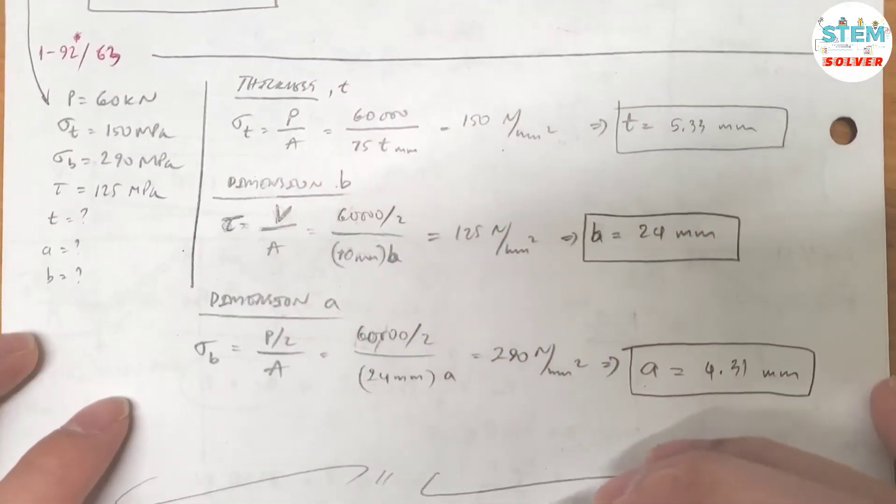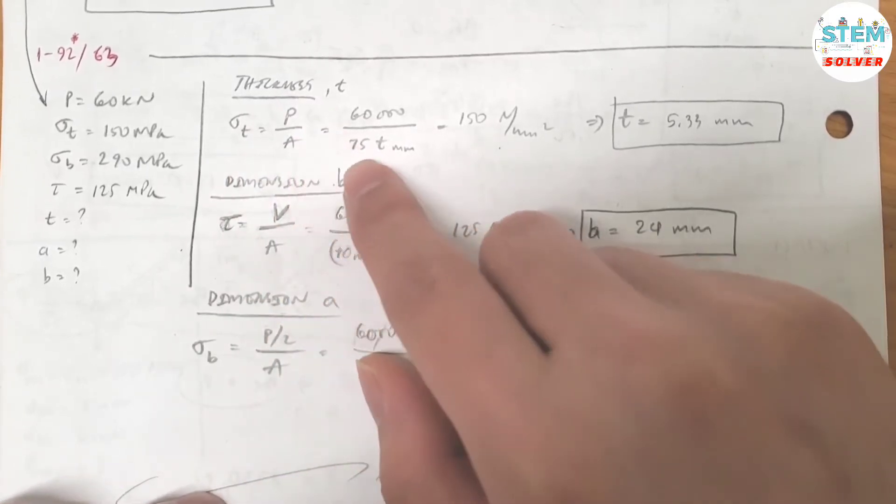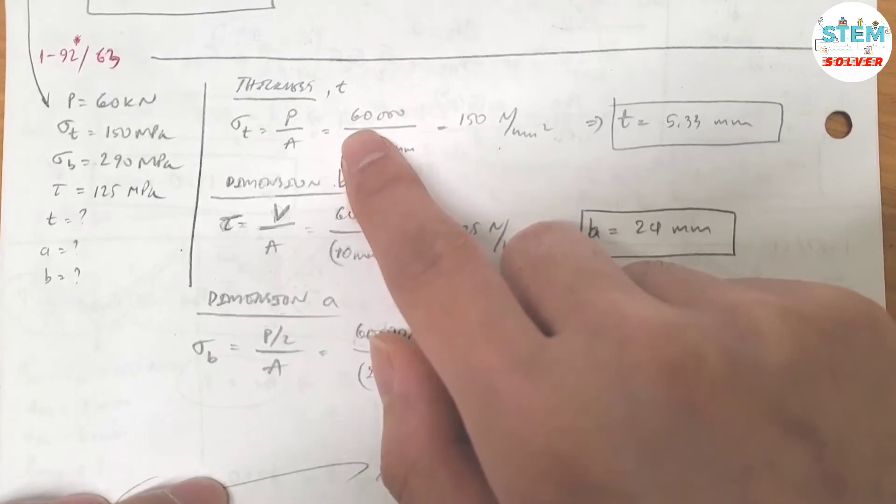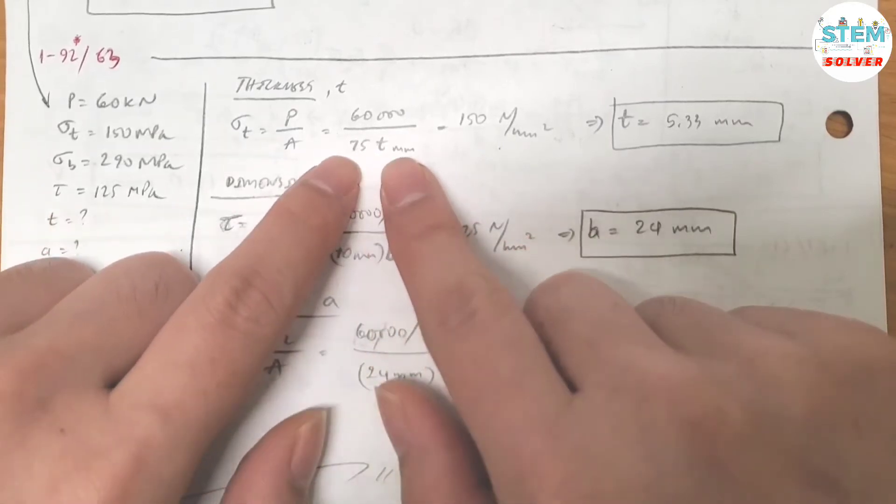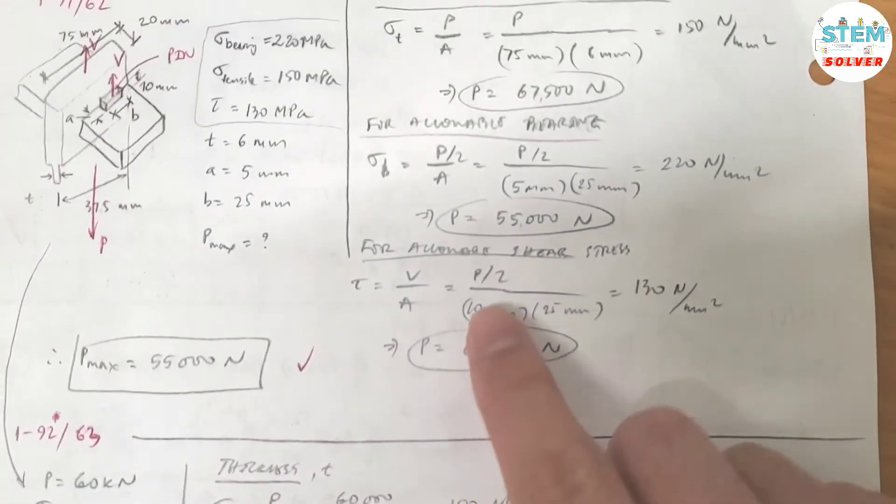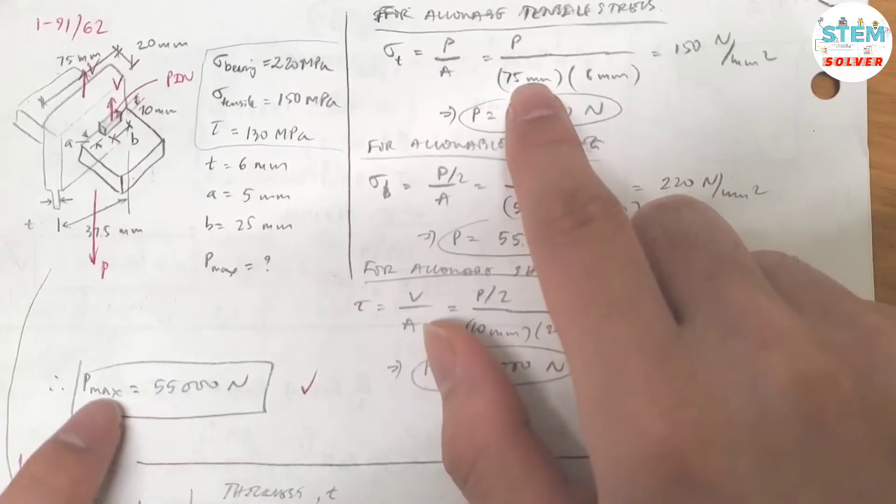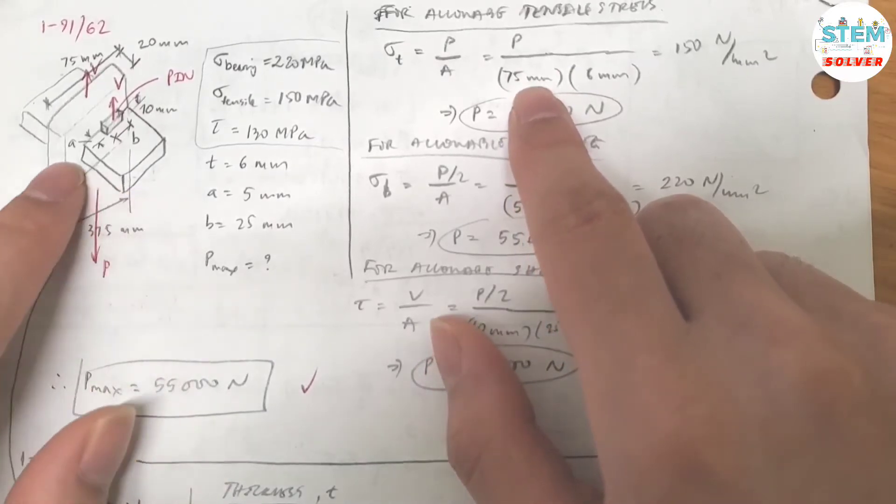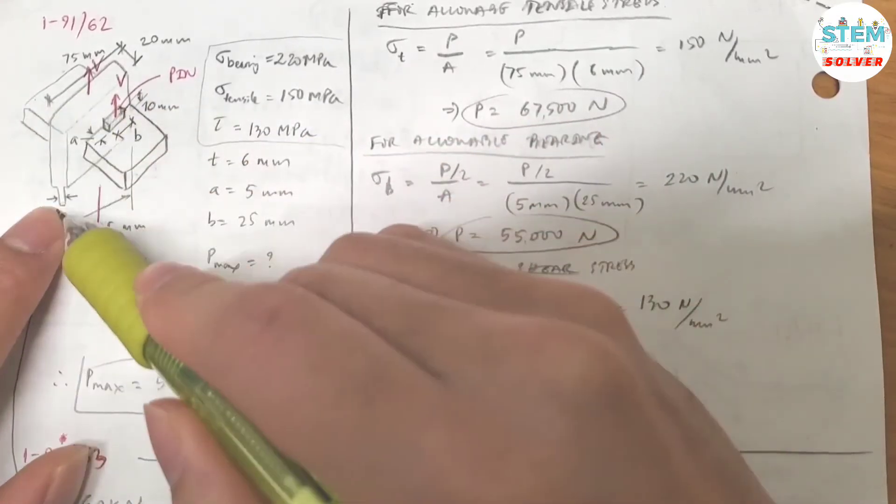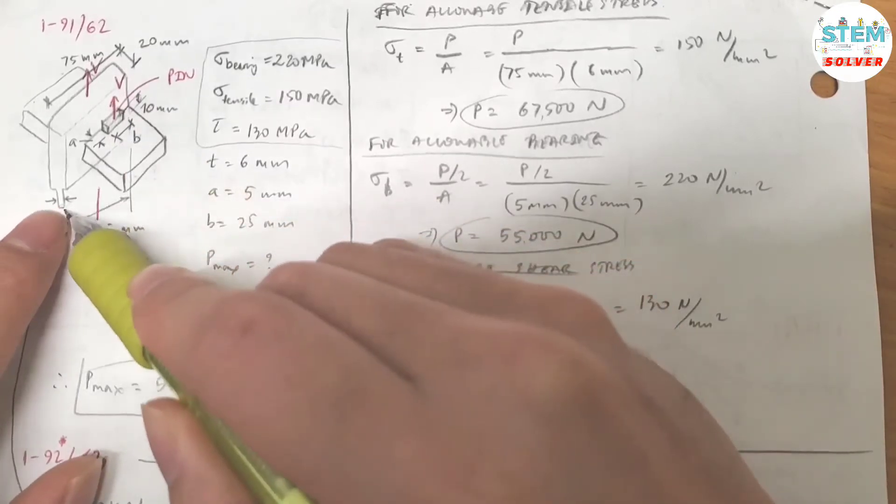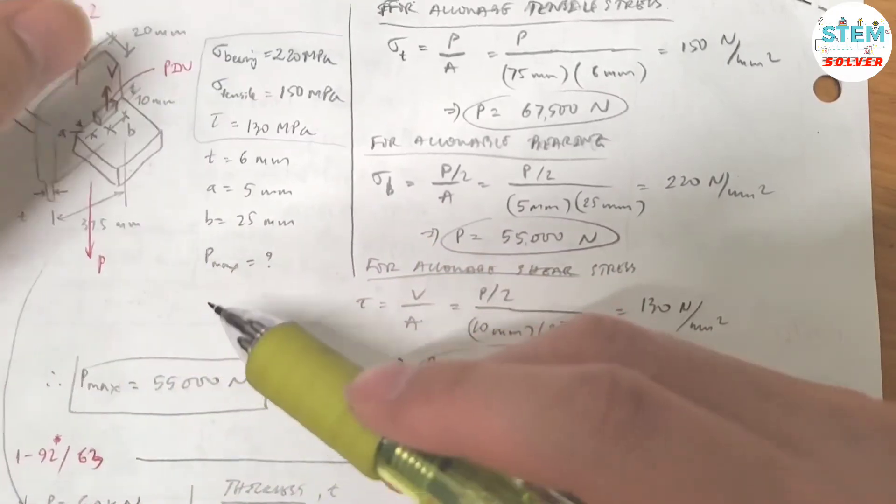For the thickness, the tensile stress equals force divided by area. The force is given as 60,000 N divided by the area which is 75 times T. The area is 75 mm times the thickness, which equals the tensile stress. Solving for T, you get 5.33 mm.